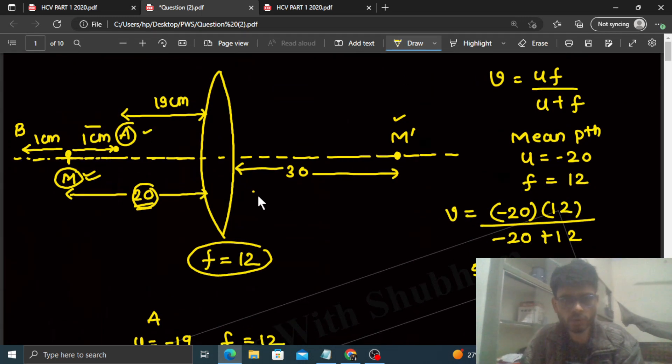So the distance is 32.57. This is the distance from the lens. This is your - here we got A dash. So the distance between M dash and A dash is basically 2.57.